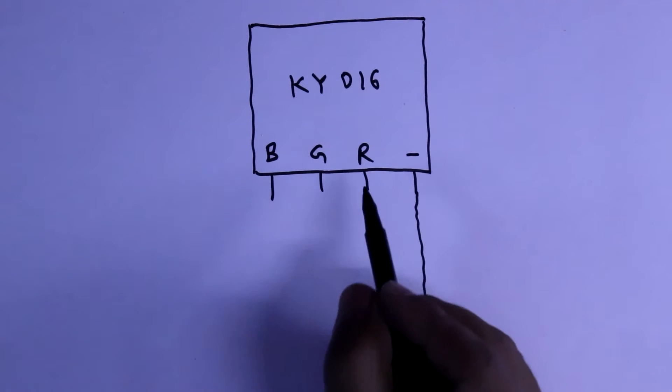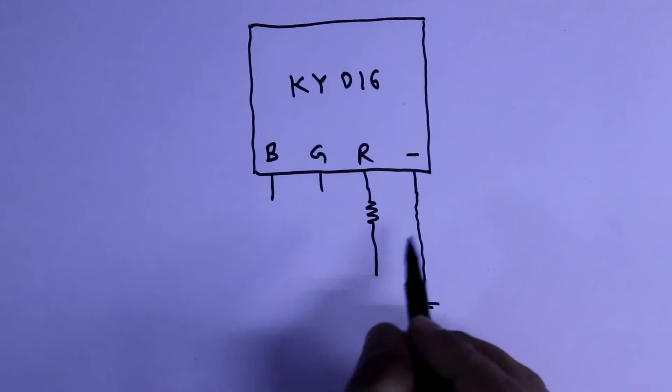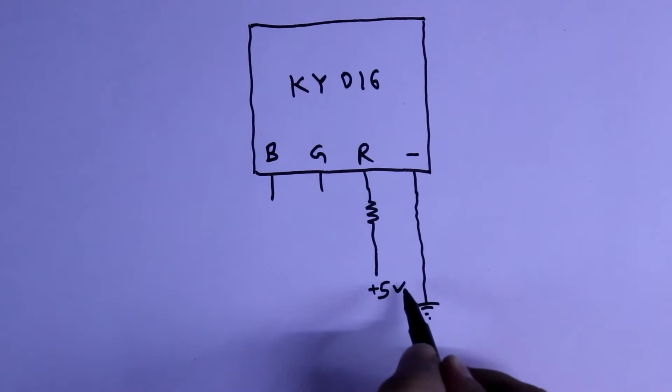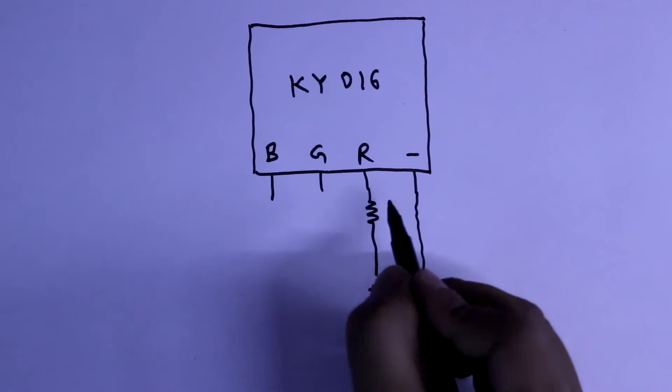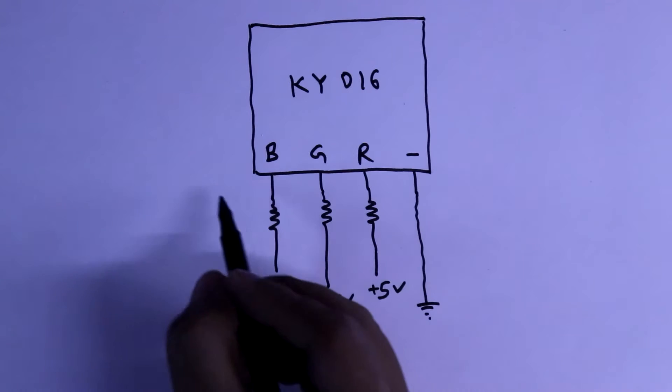And with these positive pins, we will connect a resistor. And then we will connect this pin to the 5V. This resistor value is 220 ohms.